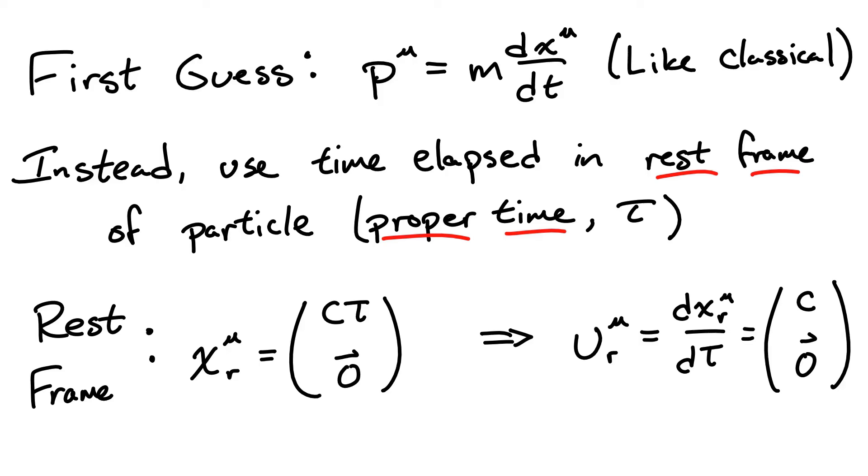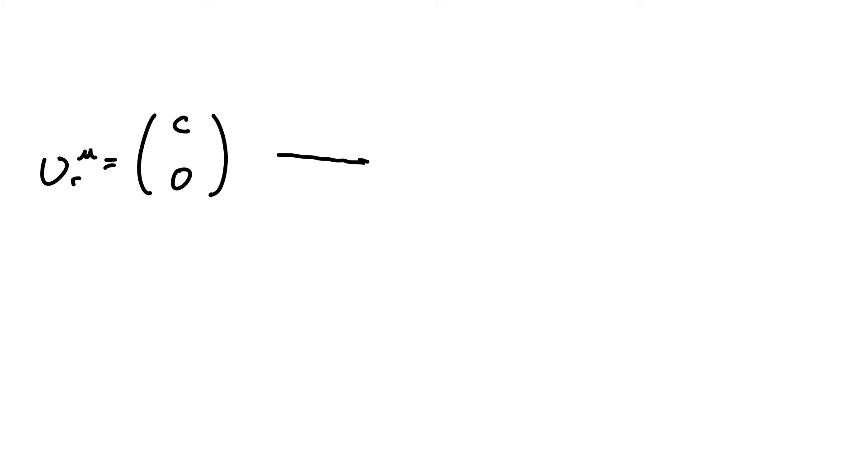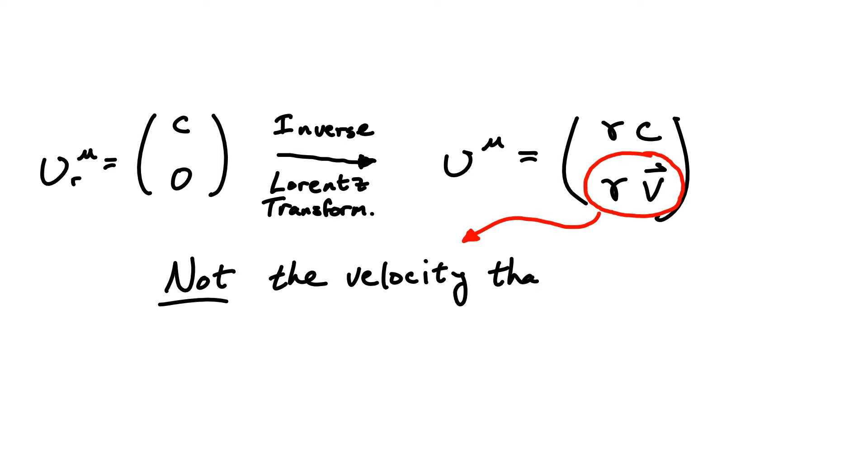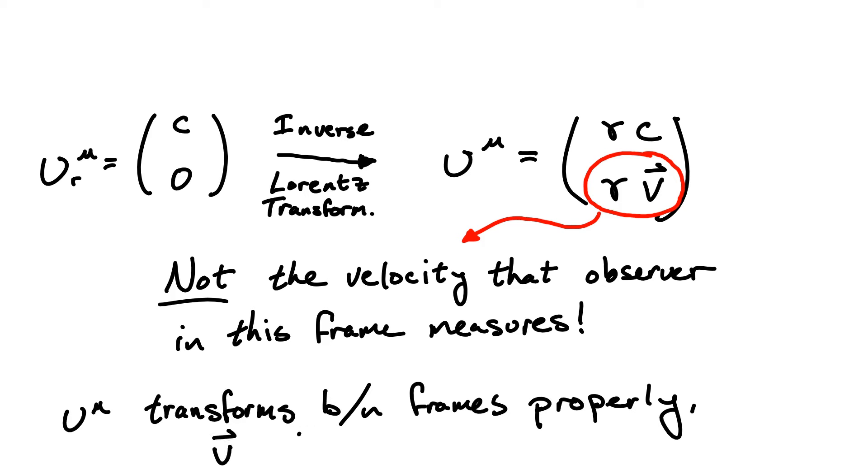Now, to get to any other reference frame, we simply need to perform a Lorentz transformation, or really an inverse Lorentz transformation in this case. Note that this is not the same as the true velocity that this observer measures. They'll see the particle simply traveling at a velocity v. This is instead a frame invariant way of talking about the motion of the particle through spacetime, and since we want to make a general statement about conserved quantities regardless of the reference frame, this proper velocity is the thing we want to use.